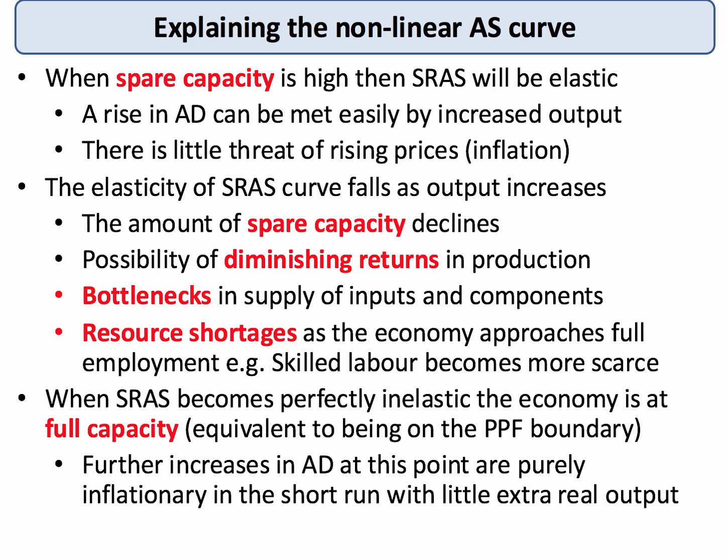Labour shortages may start to become a problem, particularly businesses complaining they can't get hold of the skilled workers they need, for example in car making or in construction. And when aggregate supply becomes perfectly inelastic, the economy has reached its full capacity level, equivalent to being on the PPF. At this point, if aggregate demand was to increase still further, the main threat would be just an increase in inflation, with little or no extra increase in real national output.